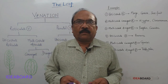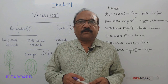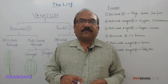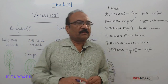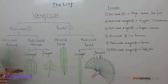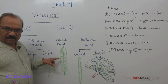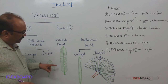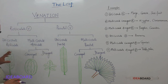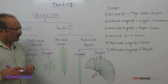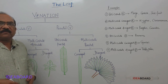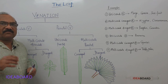Hello students. Now, in this video, we will discuss one aspect of the leaf, that is venation. You can see in the lamina of the leaf, you will see some lines. These are called veins, and these veins are actually composed of vascular tissues — xylem and phloem.